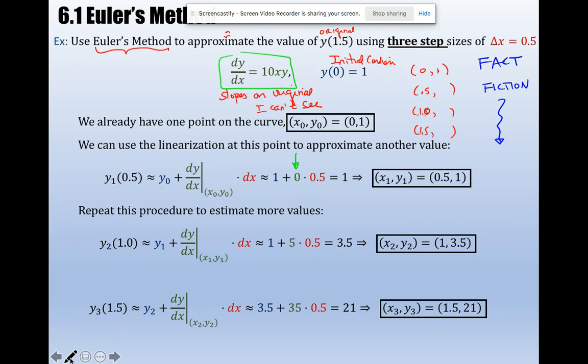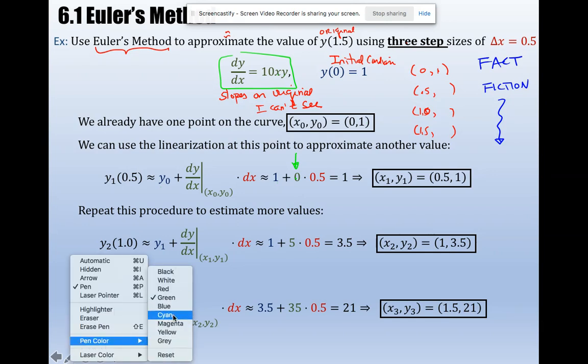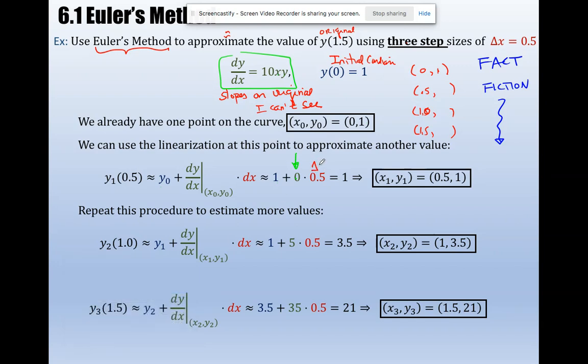And then I multiplied by dx. Slope times dx. When I evaluated that I got 1. This is my new fiction y. So Euler predicts that this is the actual x sub 1 y sub 1, approximately 0.5 comma 1. So I'm going to plug in fiction when x moved from 0 a distance of 0.5, Euler predicts the y value will be 1.